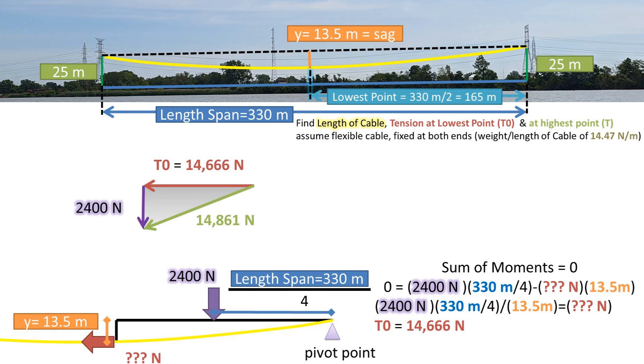Now to get the tension at the top of the tower, we have to form a right triangle with one of the legs being the force from the weight of the cable and the other leg being the tension at the lowest point or zero point. We can use the Pythagorean theorem, which is a squared plus b squared equals c squared, rearranged to get what we were solving for, c to one side. Plugging in our values, we get a tension at the tower fixed point of 14,861 newtons.